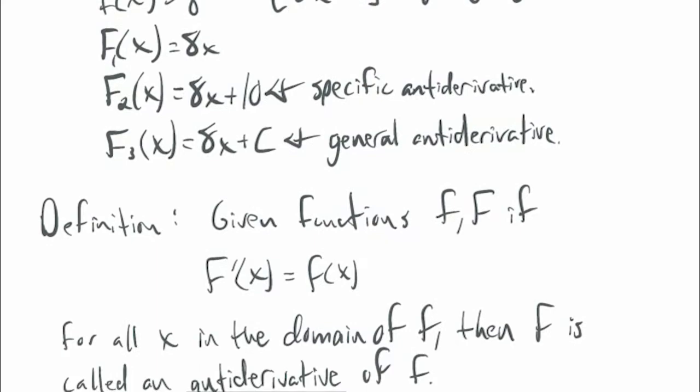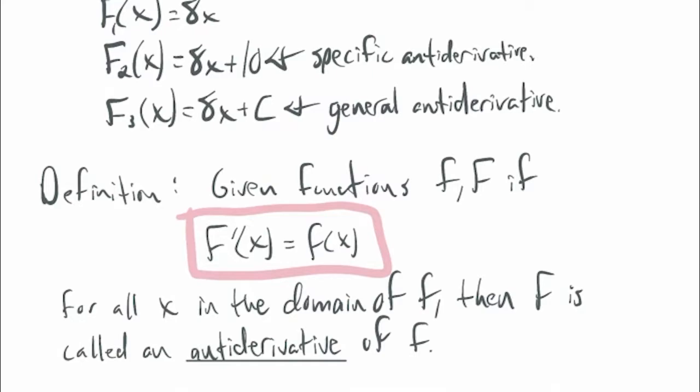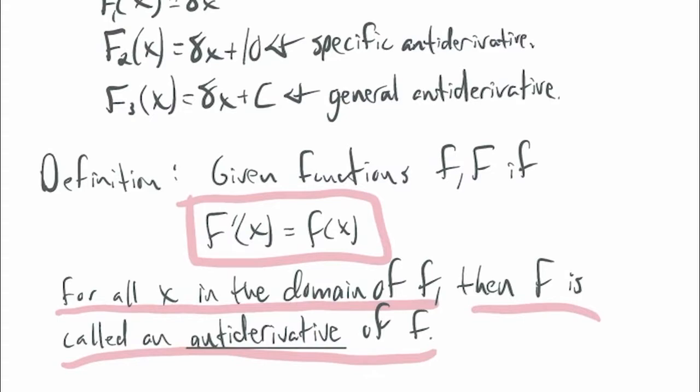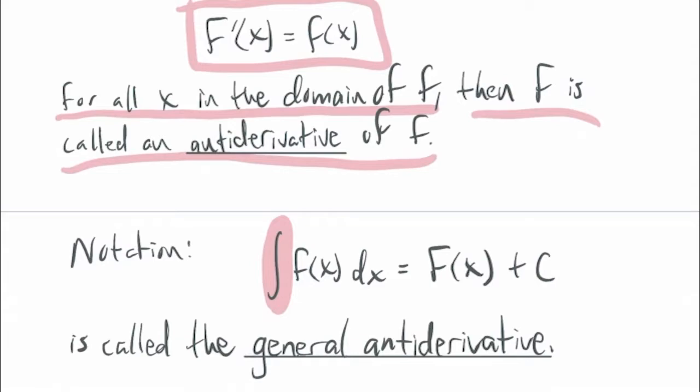So given functions little f and big F: if F'(x) = f(x) for all x in the domain of little f, then big F is called an antiderivative of little f. This is what we were talking about above, just written as a definition. This notation here might not mean a whole lot yet — we'll give it more context later.